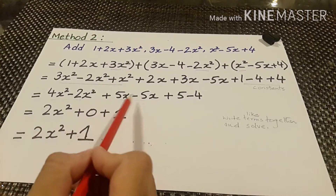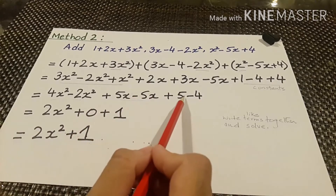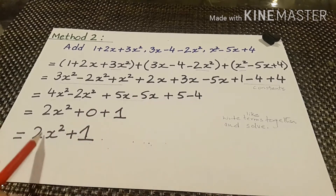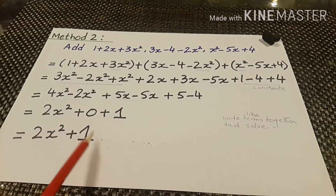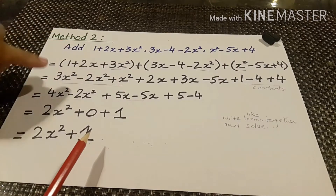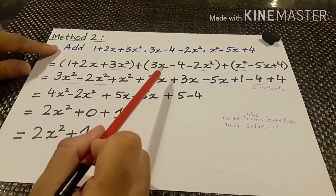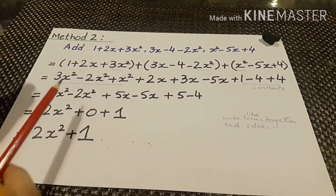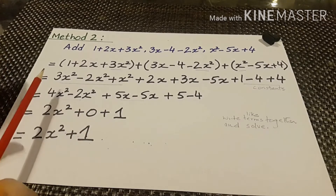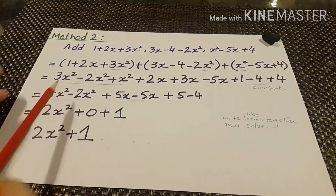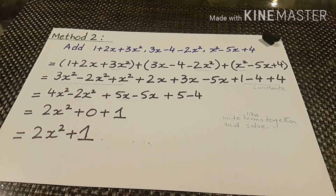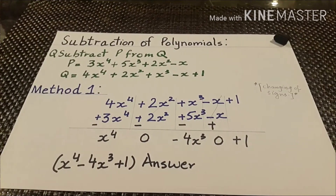Here 2 plus 3 is 5x. When we subtract: 2x squared. The x terms cancel out giving 0. 5 minus 4 is 1. So we get 2x squared plus 1. The key point is that we write the like terms together and then do the solving. These were the two methods of adding polynomials.